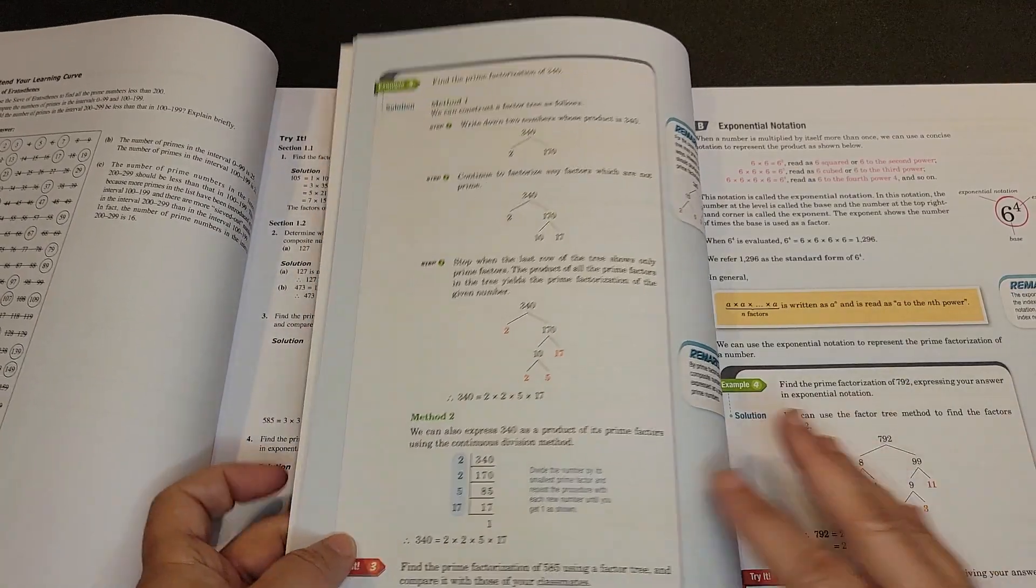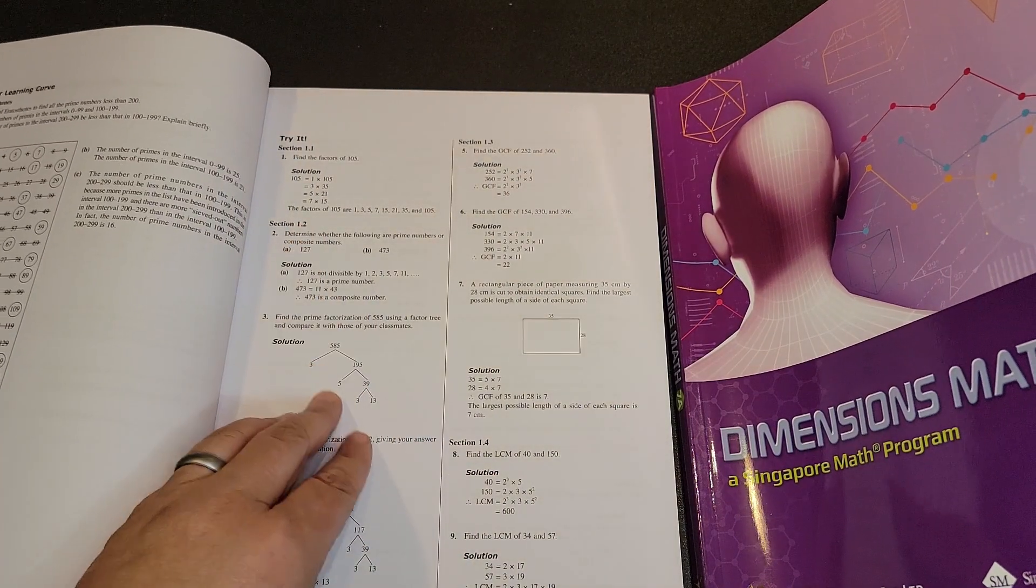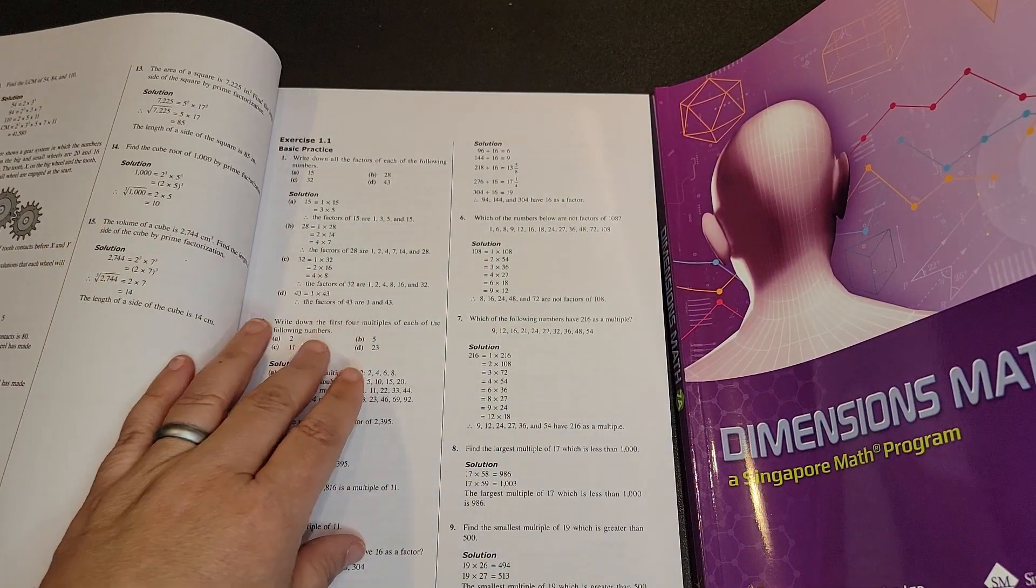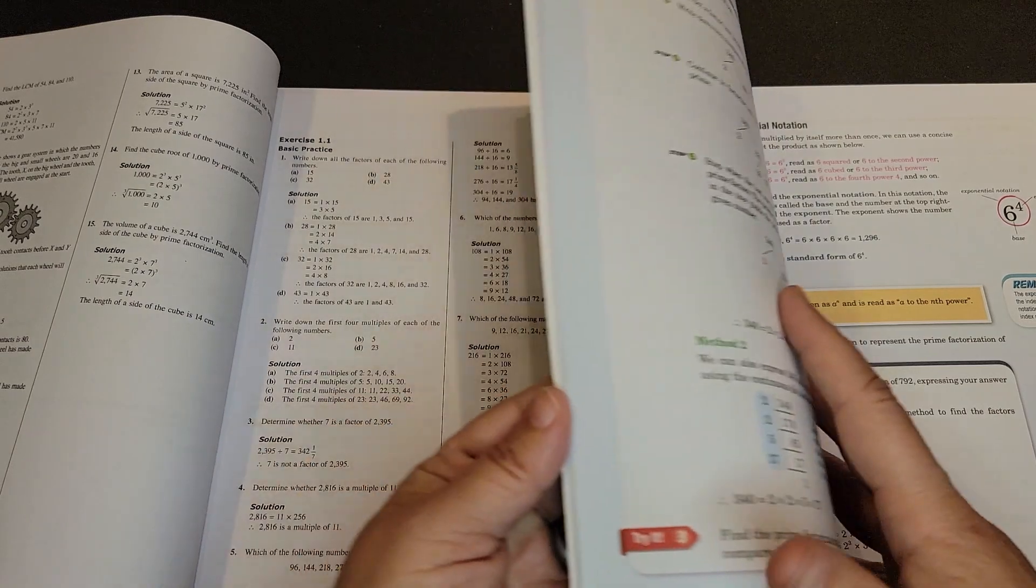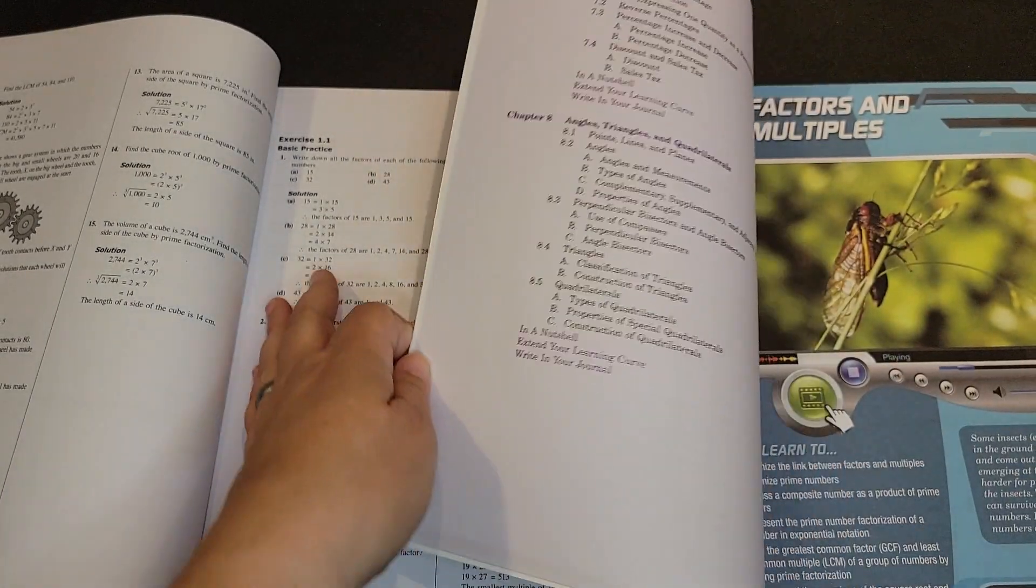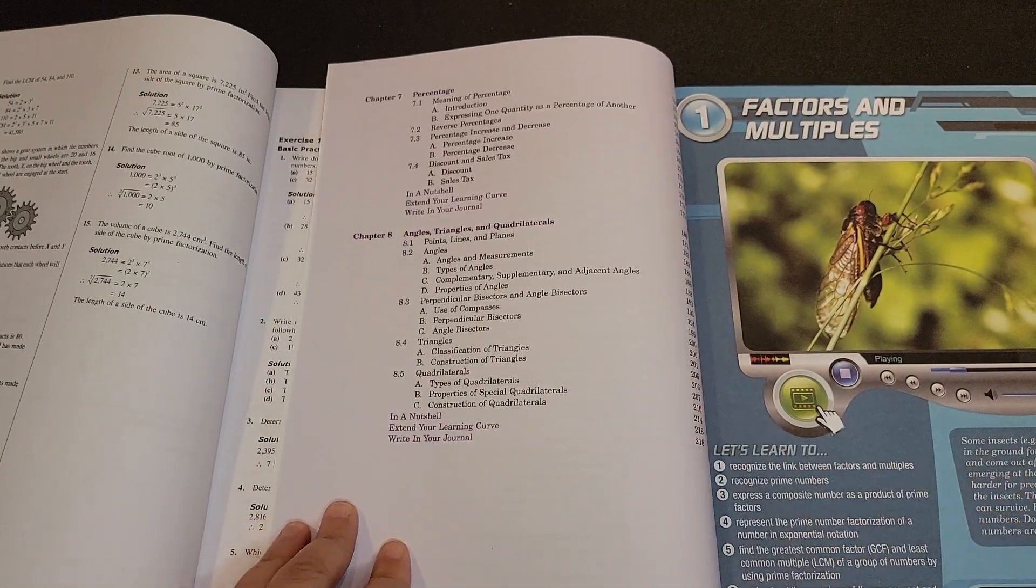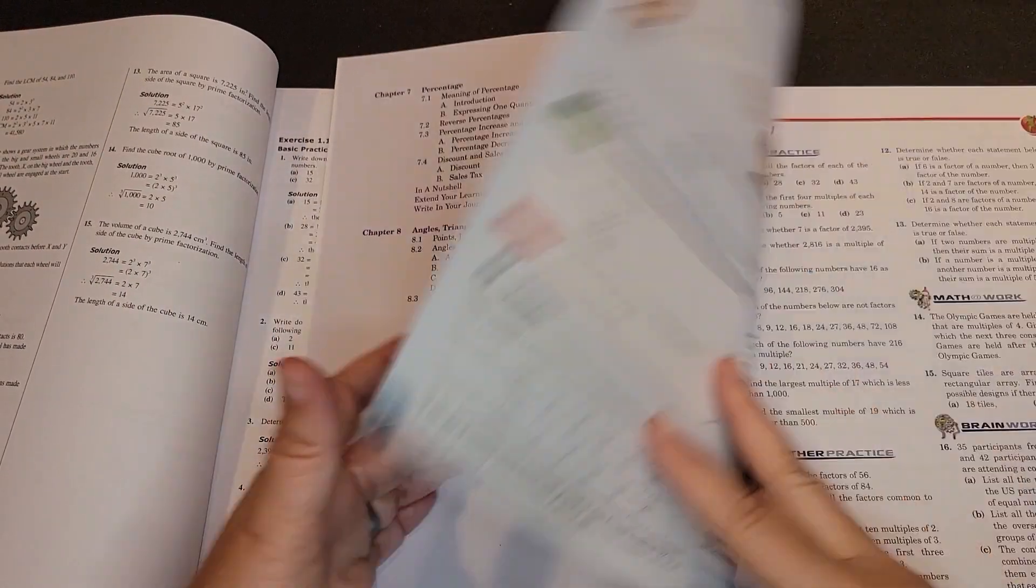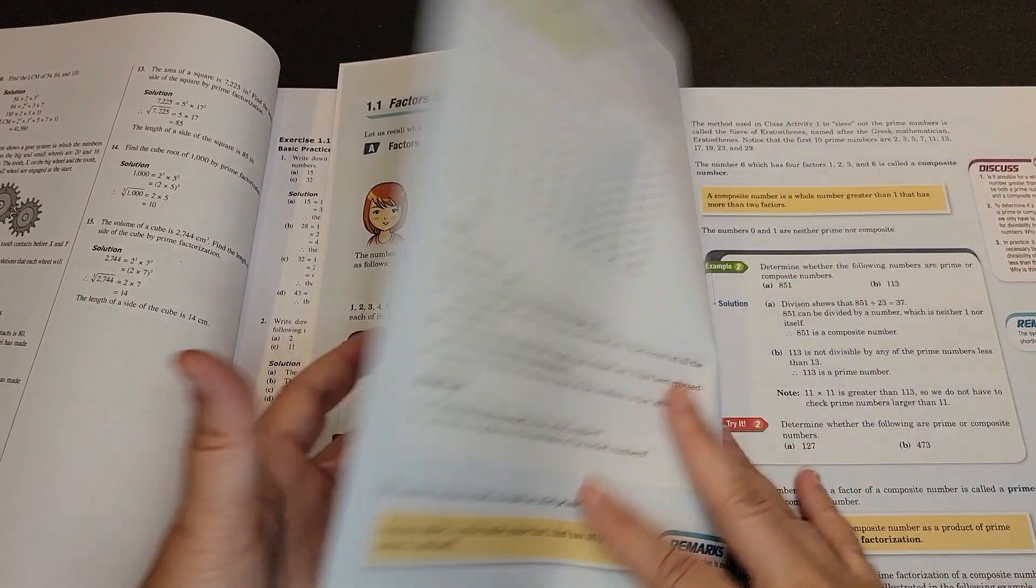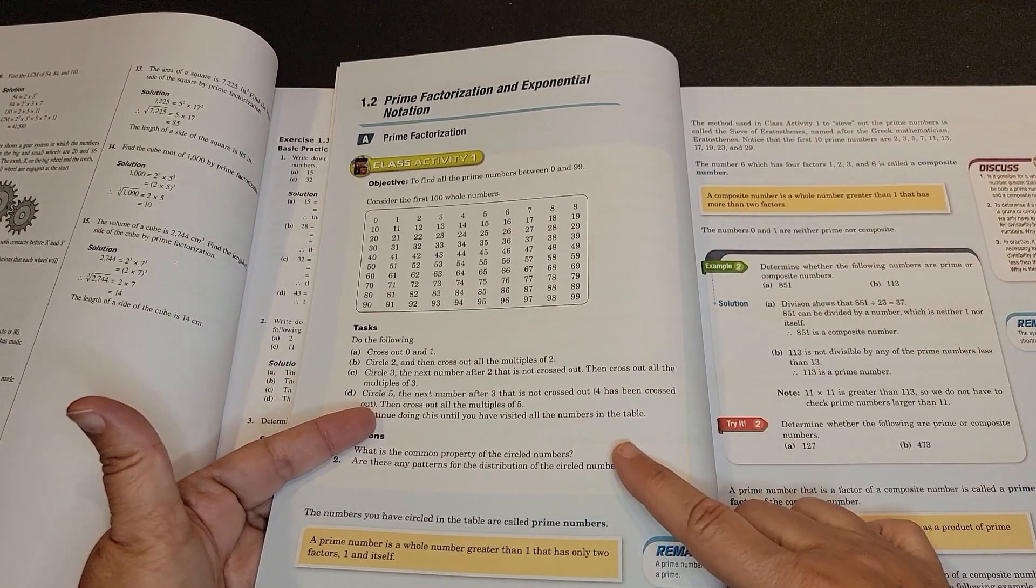So anywhere there's a try-it, you'd have to look up here for your try-its. Then it goes back to your exercises. In review, the first thing that you will be discussing for chapter one in your teacher's guide is the class activity. So this is on page number four.